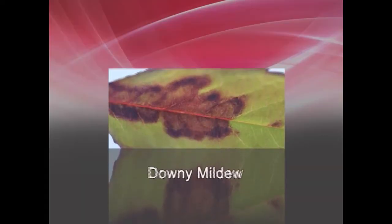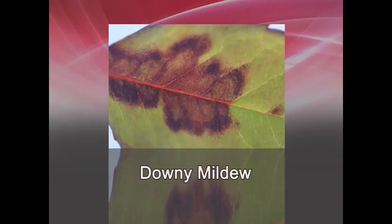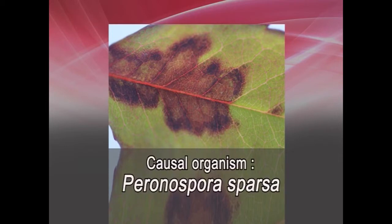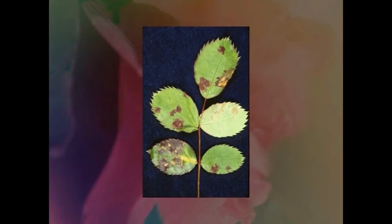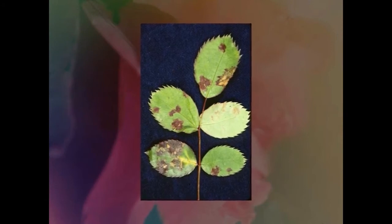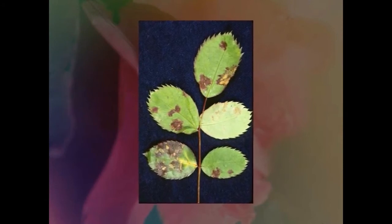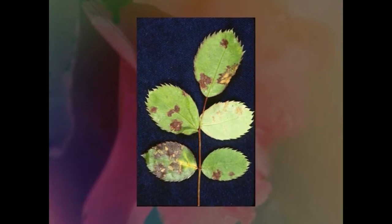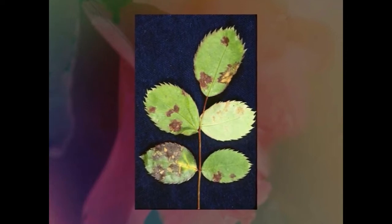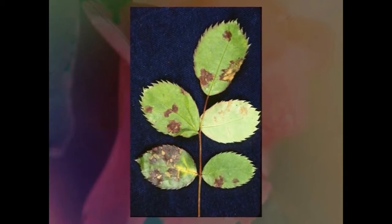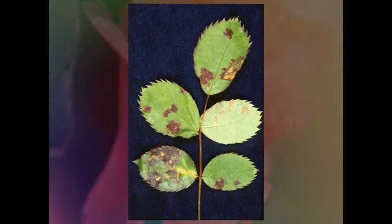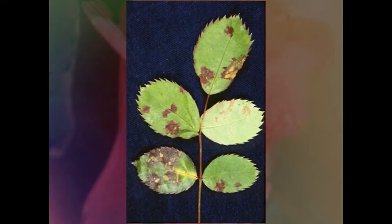The next important disease is downy mildew, caused by Peronospora sparsa. Initially symptoms appear as pinkish-brown irregular spots on tender shoots. The fungus causes chlorotic blotches on the upper surface of mature leaves which ultimately become necrotic.